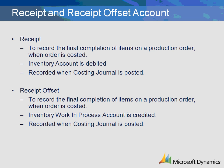The Receipt Offset Transaction is the setup related to the recording of completed and costed production orders. The transaction, which is the offset to the receipt transaction, is created when the final calculation of the production order is completed through the costing journal and is posted for the production order. The ledger account for this transaction is the inventory work in process account and is credited at the time of the journal posting.